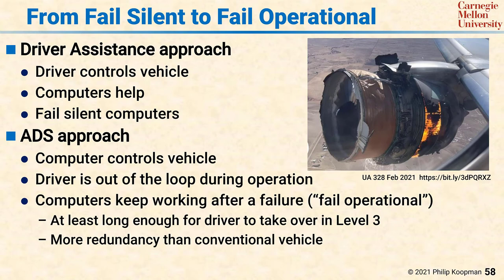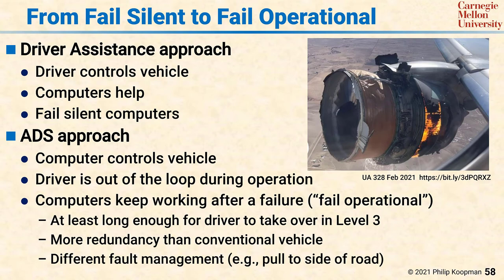That means if one computer dies, there needs to be another computer ready to take over. That requires potentially more redundancy than a conventional vehicle, and it requires different fault management. On automated vehicles, computers no longer just fail silent — they have to fail operational and keep working at least for a little while to do something to mitigate the failure rather than leaving the vehicle uncontrolled at highway speed.